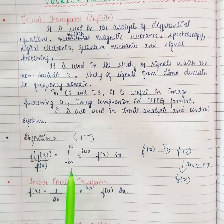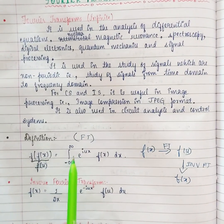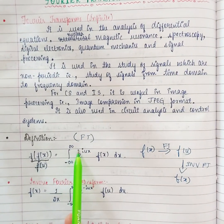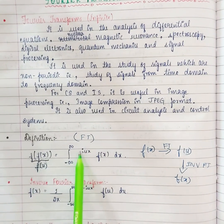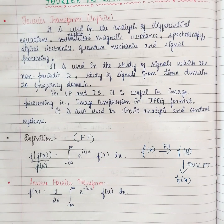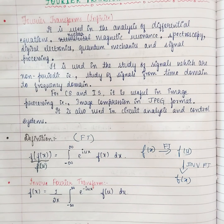For normal Fourier transform the integral limits are from minus infinity to infinity, but for cosine and sine transforms the limits are going to be 0 to infinity. Also, e power iux equals cos theta plus i sine theta, so it is a combination of cos as well as sine. For cosine transform only cos will appear in the formula, and in the sine transform only sine will appear.